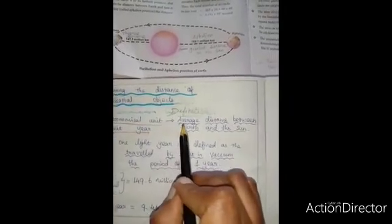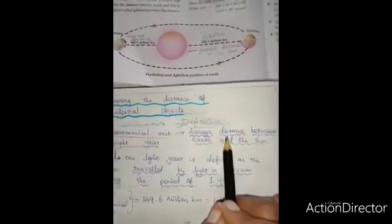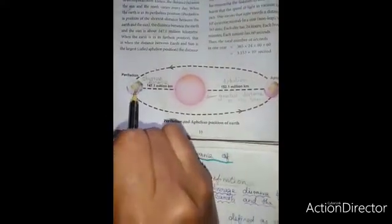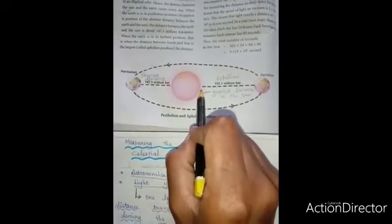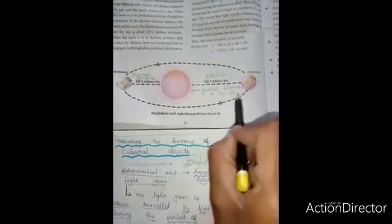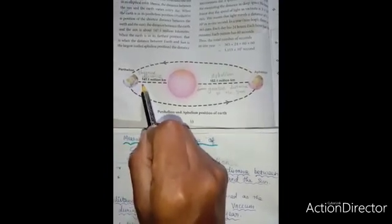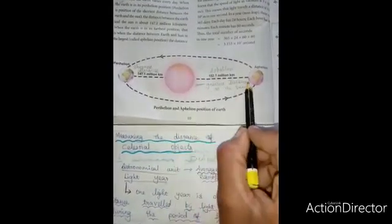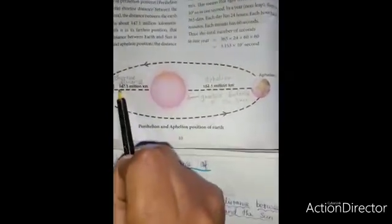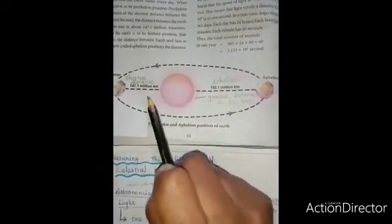Astronomical unit is defined as the average distance between the earth and the sun. What is this average distance? See this picture. The distance between the earth and the sun varies in certain period. Because earth rotates the sun in elliptical orbit. So, the distance varies. Perihelion is the shortest distance. And aphelion is the greatest distance between the earth and the sun. The values are given here. Taking the average of these two values, we are calculating the astronomical unit. So, one astronomical unit is equal to 149.6 million kilometer or 1.496 into 10 power 11 meters.